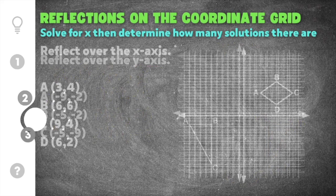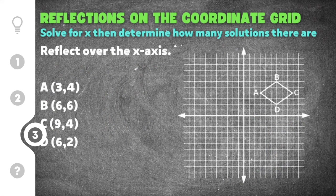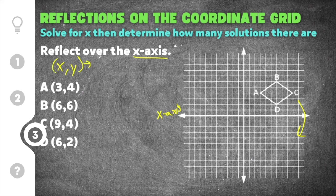Finally, we're going to move on to our last practice problem. This problem says to reflect over the x-axis. The x-axis is the horizontal axis, which means that our figure is going to move from the first quadrant down to the fourth quadrant. When reflecting over the x-axis, the rule is to keep the x value the same and change the sign on the y value.